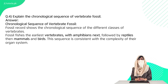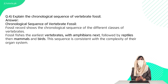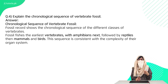Question 4 is: explain the chronological sequence of vertebrate fossils. The fossil sequence refers to which fossil was discovered first. First of all, fish fossils were discovered, then amphibians, then reptiles, then birds, and then mammals. The fossils are dated using carbon dating to discover the timeline in which they were created — the oldest being amphibians and the newest being mammals.